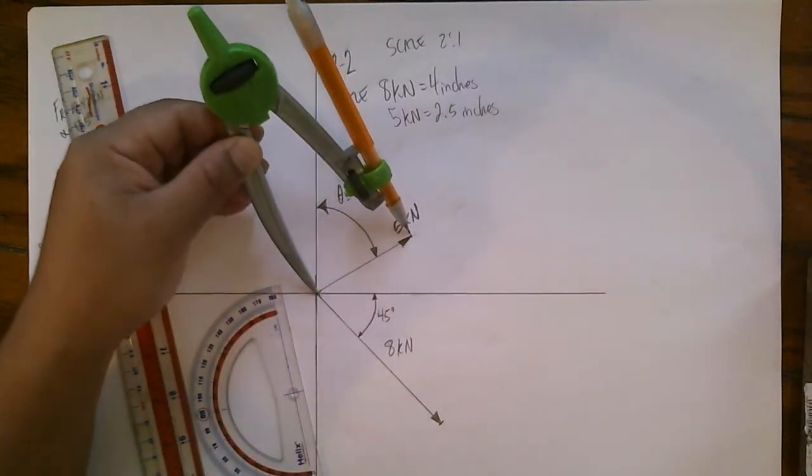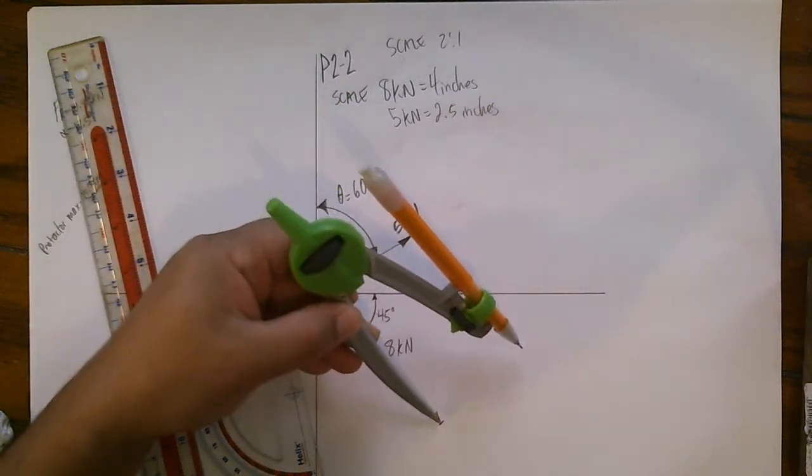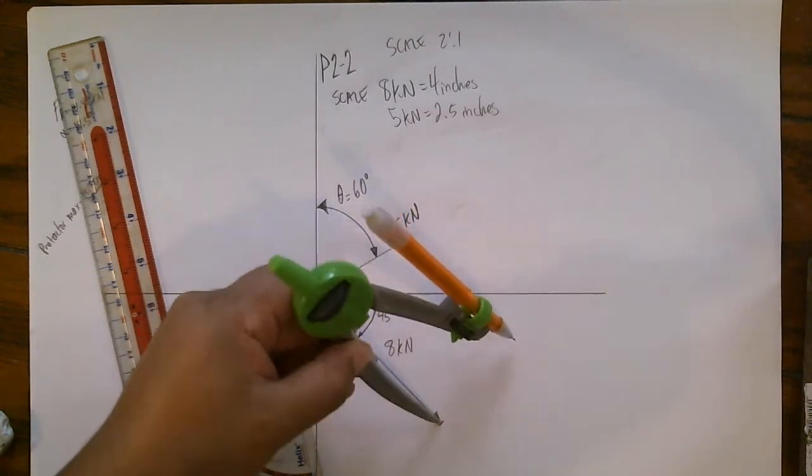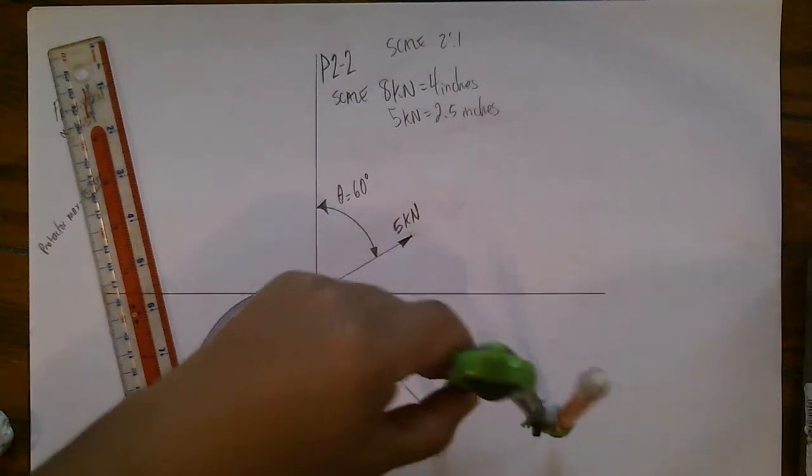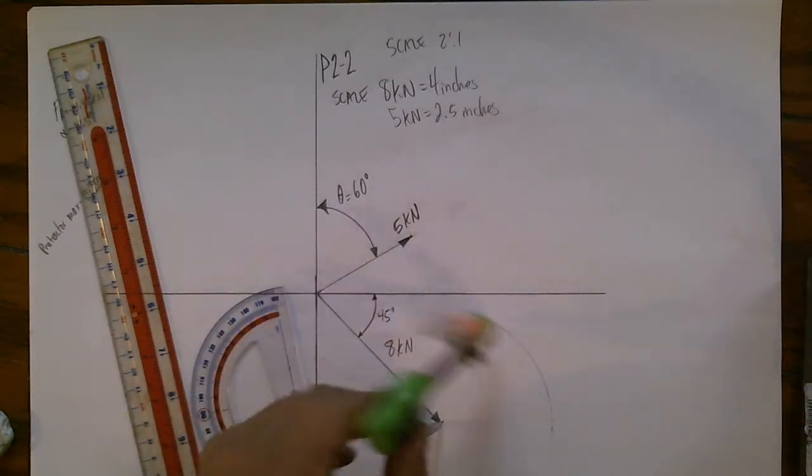Okay, then what you want to do is take that protractor, take that tip to the tip of the 8 kilonewtons, right here where it ends, and just draw part of a circle here. You'll see in a moment why I'm doing this.